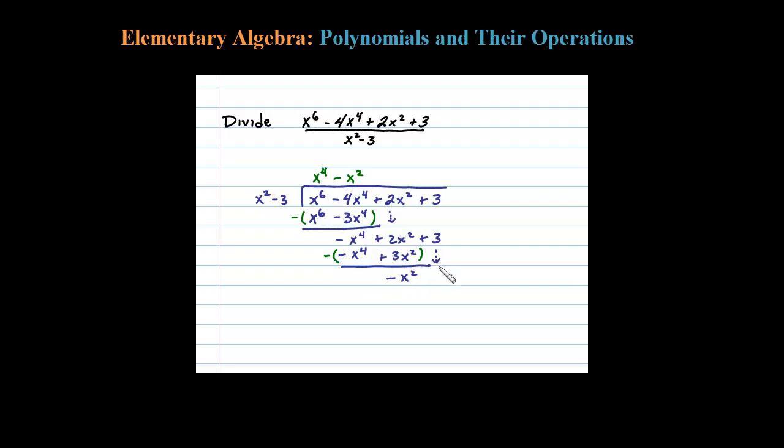Finally, what times X squared will give me negative X squared? Let's try negative 1. Negative 1 times X squared is negative X squared. Negative 1 times negative 3 is plus 3. Those two binomials are exactly the same, so when I subtract I should get 0. Negative X squared plus X squared is 0, and 3 minus 3 is 0.